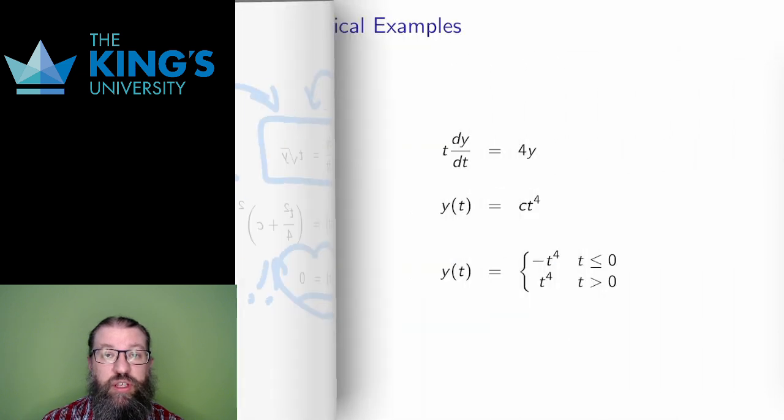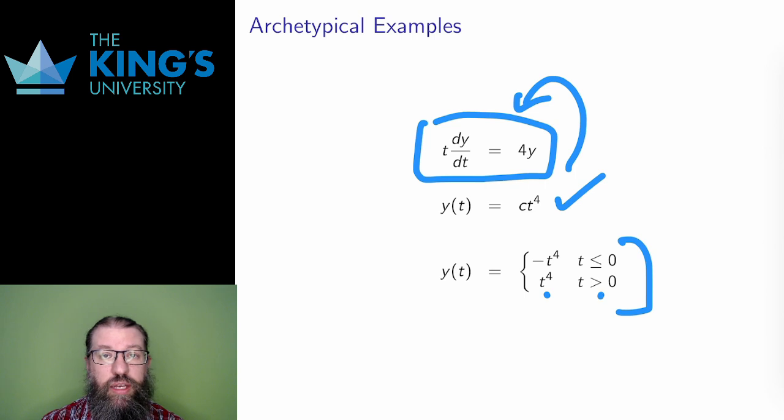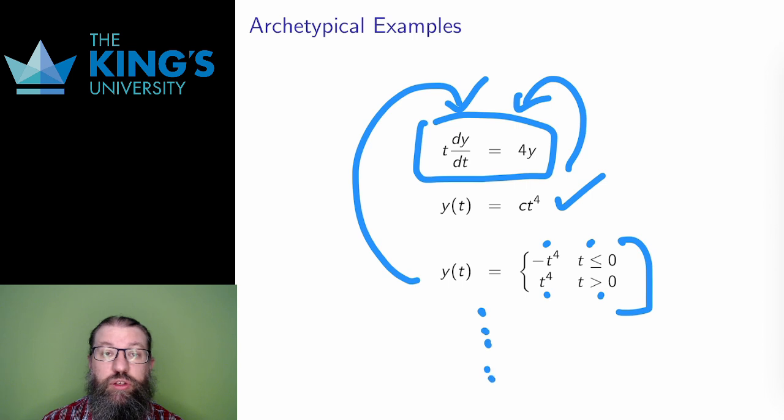Here is another example of a singular solution. The family y equals ct to the 4 solves this differential equation for any number c. However, there are also strange piecewise solutions, such as a function that is t to the 4 for the positive numbers and negative t to the 4 for the negatives. This is a singular solution, and it turns out that there are many more singular solutions to this equation as well.